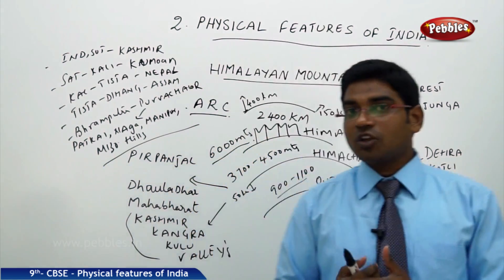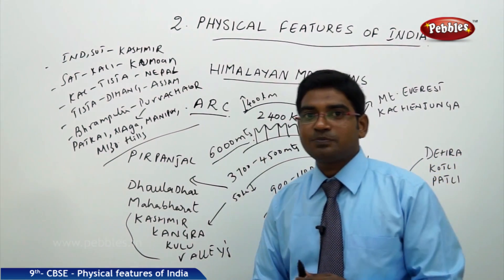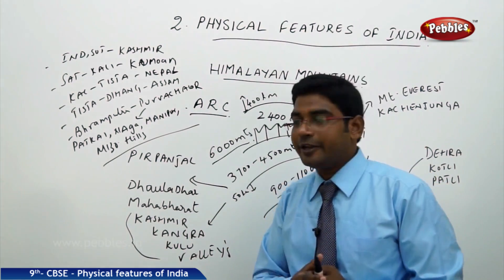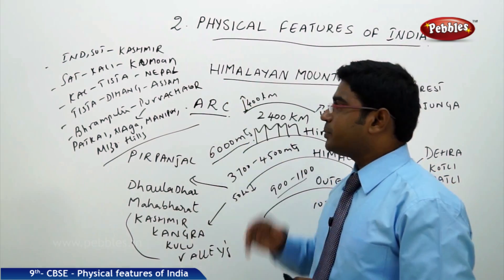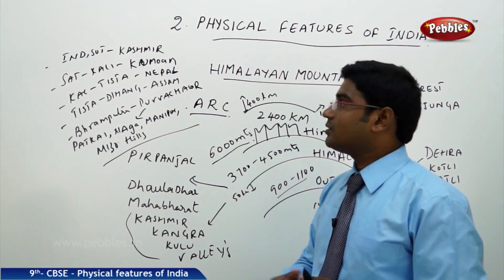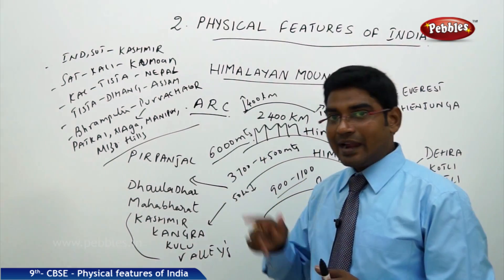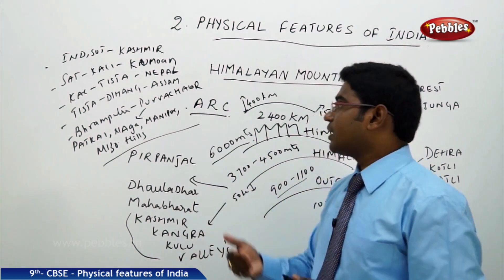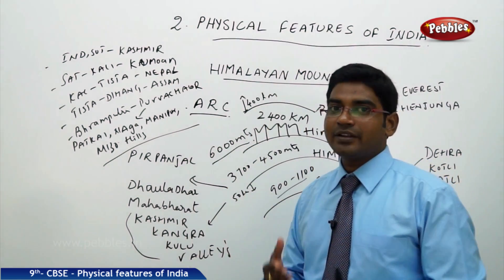The Himalayas are also named according to the rivers passing through them, from the Indus to the Brahmaputra. The region between the Indus and Sutlej is known as the Kashmir Himalaya region. The region between the Sutlej and Kali River is known as the Kumaon Himalaya region. The region between the Kali and Tista rivers falls in the Nepalese Himalayan region, as it does not fall under Indian land.